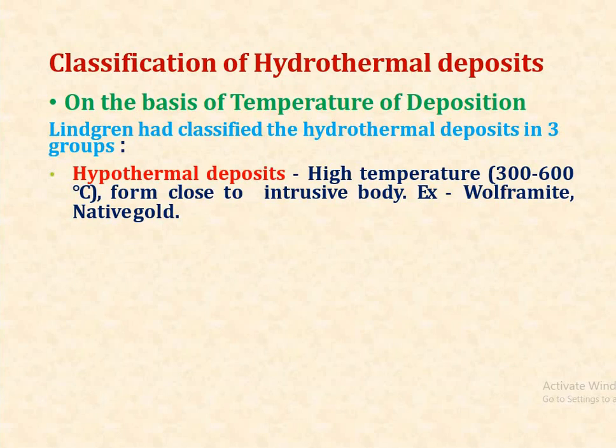The first one is hypothermal deposits — high temperature deposits that range from 300 to 600 degrees Celsius. They form close to the intrusive body, and the deposits include minerals like wolframite and native gold.